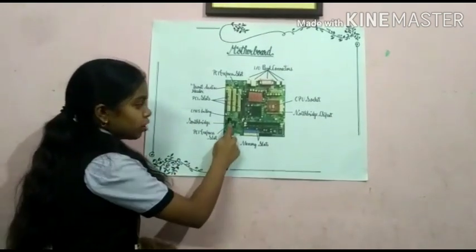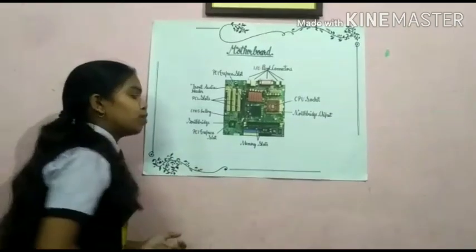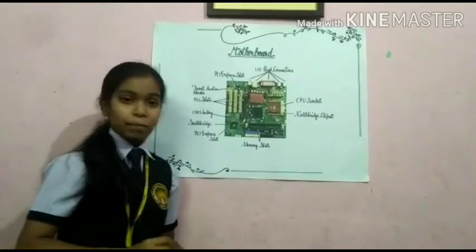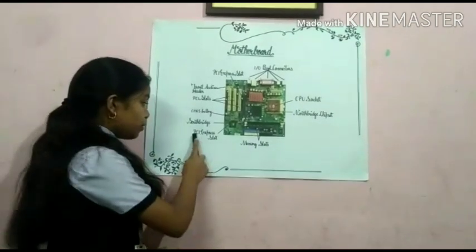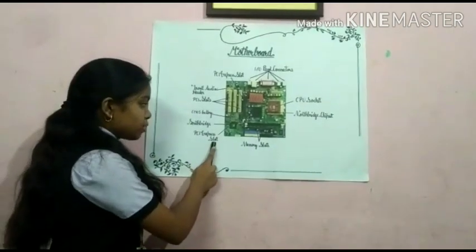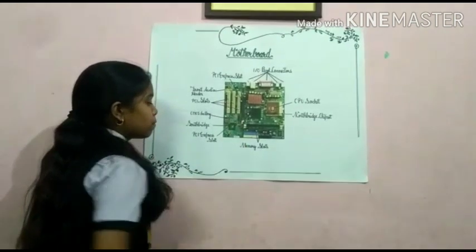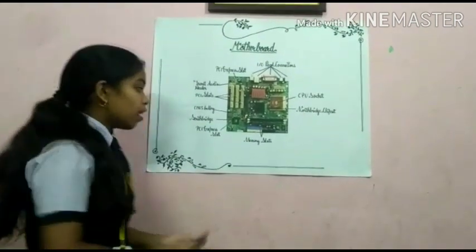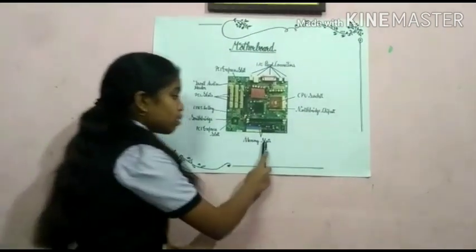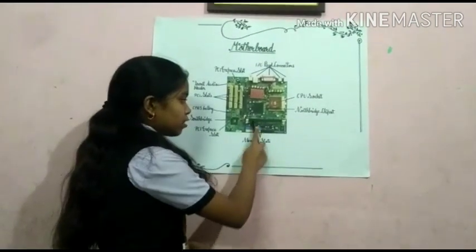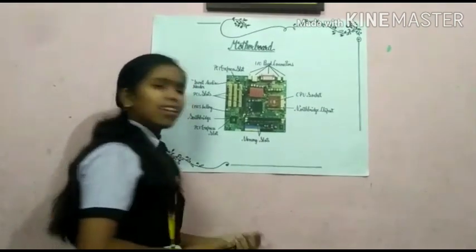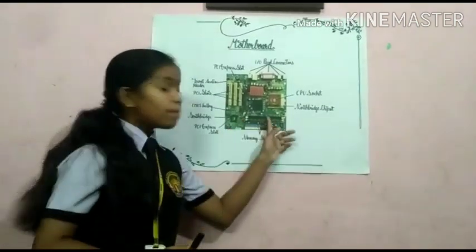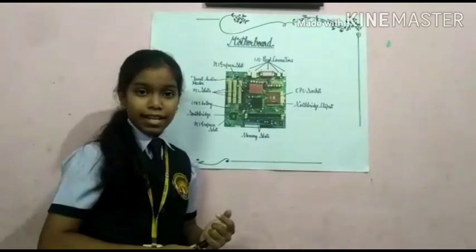The Southbridge — this one is known as the Southbridge, also referred to as a CPU hub. The PCI Express slot here is another PCI Express slot. Here are the memory slots, and this is where the RAM is inserted inside it.